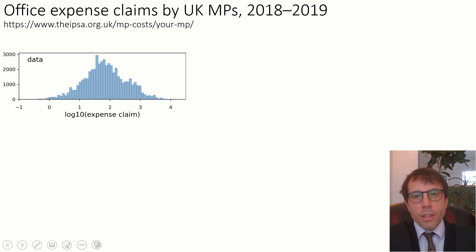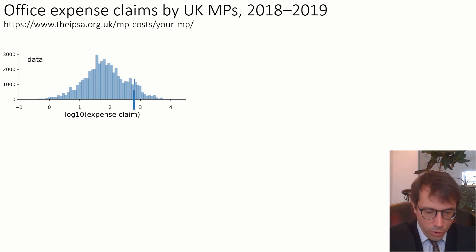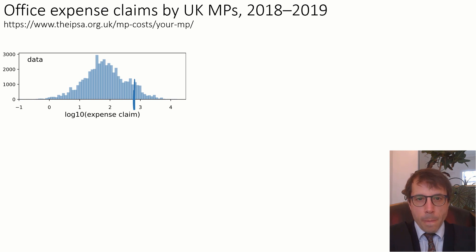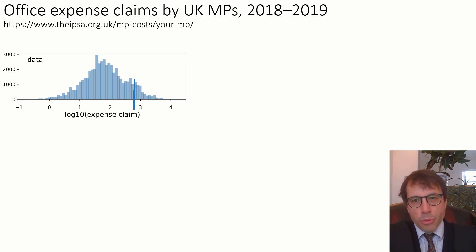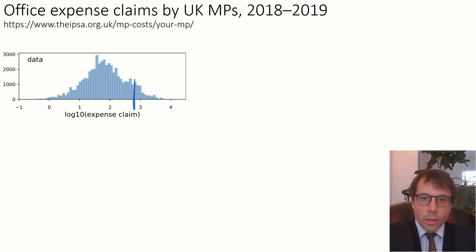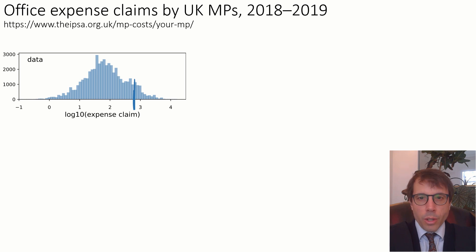When you have a nice rich data set plotted, it opens the door to all sorts of questions. Looking at this, my eye is drawn to what looks like a hump at around 2.8, which corresponds to about 630 pounds. I'd want to know: is there really a hump? Can I pinpoint its exact location? Why is the hump there? What sorts of expense claims belong to the hump? Or could I classify an expense claim according to how likely it is to be part of the hump? The way to answer all of these questions is to invent a probability model and fit it to the data.